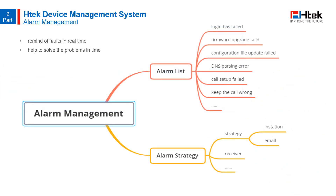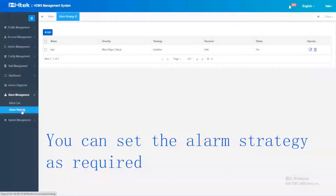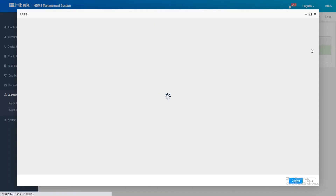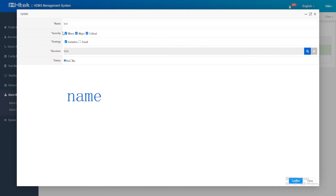In addition to device diagnosis, the alarm management function provides effective fault information for administrators. The system reminds administrators in real time when devices have faults and helps solve problems promptly. The alarm system has two parts: the alarm list, where you can see all triggered alarms and what each is about; and alarm strategy, where you decide who receives alarm notifications and whether to notify them in-station or by email. In the alarm strategy settings, you input a name, select alarm type, choose the way to receive alarms, choose a receiver, and decide whether to turn it on or off.